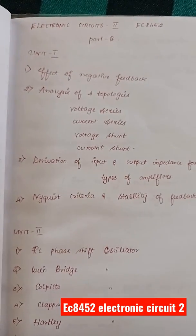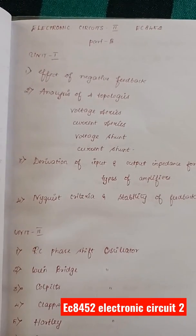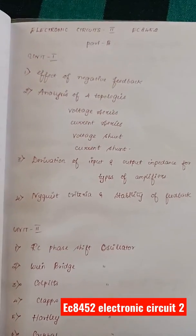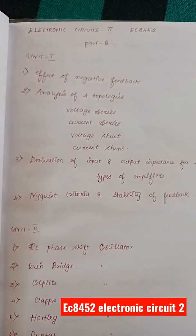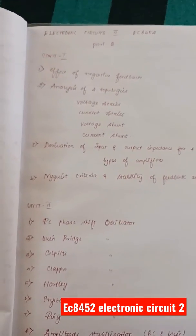So important questions in EC2, EC8452. Effect of negative feedback, analysis of 4 different topologies where you have to derive the input and output impedance for those 4 topologies, Nyquist criteria and stability of feedback amplifier.